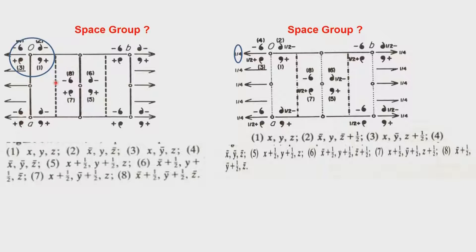Four other equivalent points are marked at this point, referring to half along y and half along x. The addition of half plus x, half plus y tells us this has to be a C-centered system. So it is monoclinic and C centered. The four equivalent points are surrounding this particular point, and there is a twofold axis coincident with this and a mirror plane which is coincident with the origin.